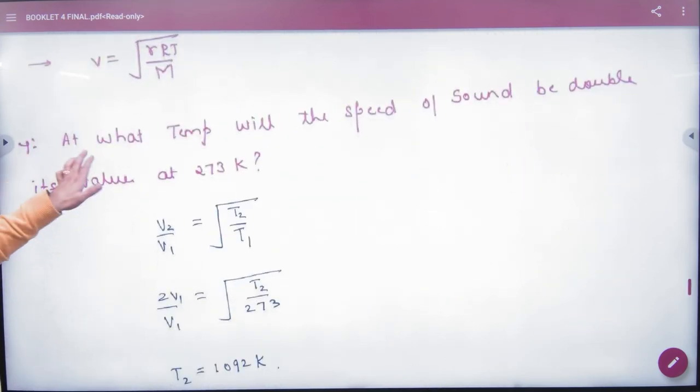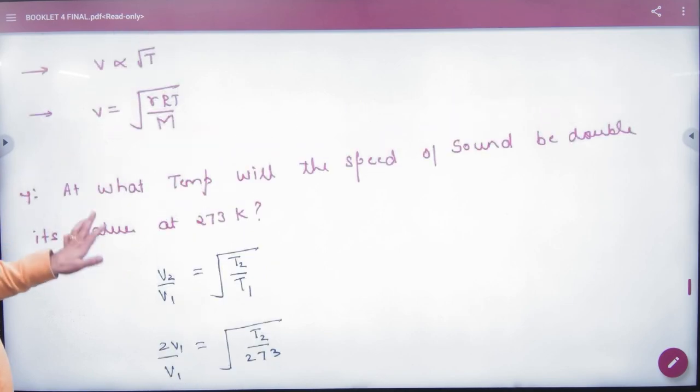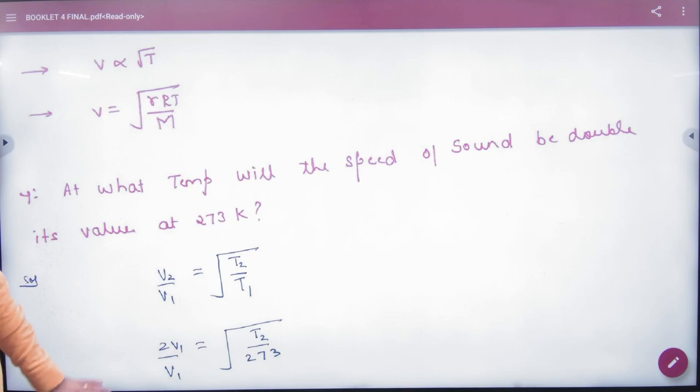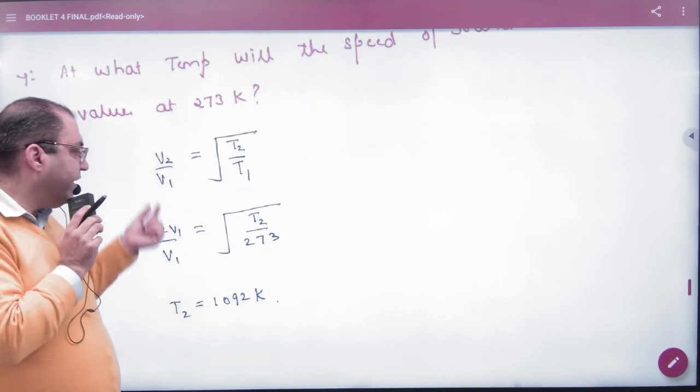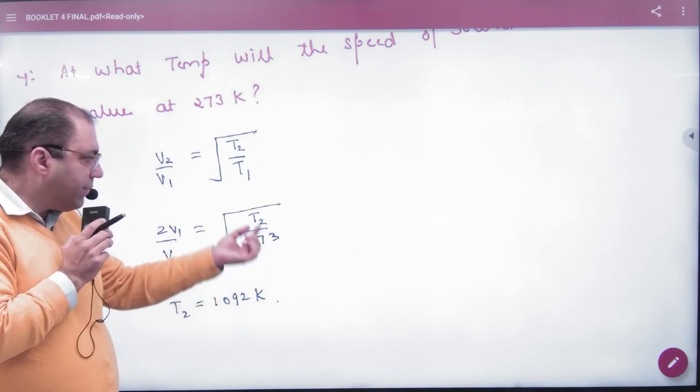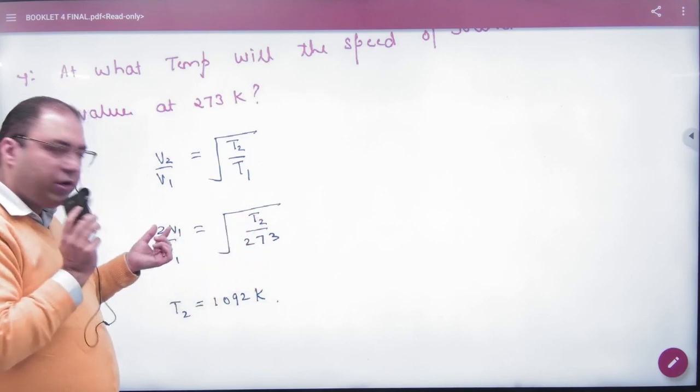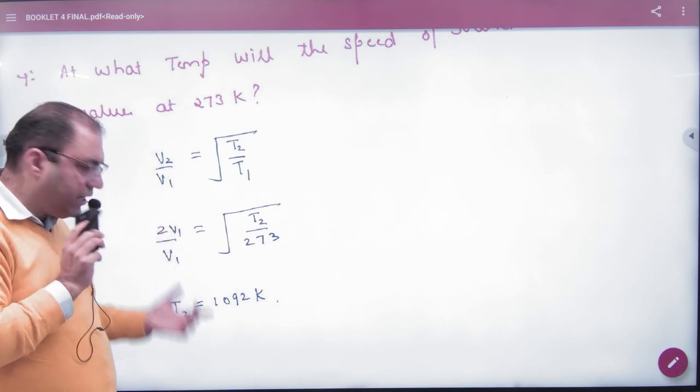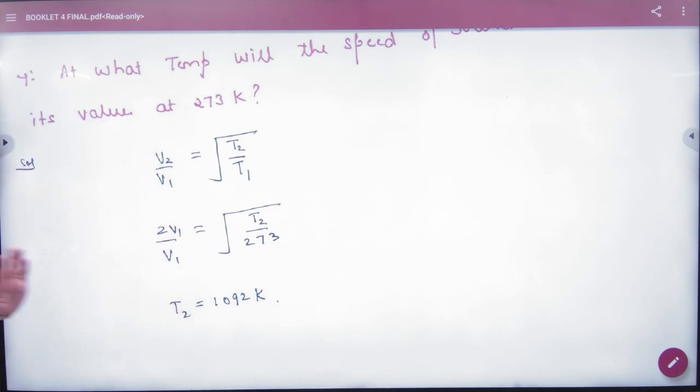Jaise: at what temperature, temperature temperature nikalna hai, will speed of sound be double the value at 273. Speed jo hai woh directly proportional to under root of temperature hai. So T2 by T1 equals V2 by V1. Temperature pehle kitna hai: 273. Naya temperature nikalna hai jab speed kya ho jayegi sound ki pehle se double. So V1 se V1 cancel, T nikalna hai, answer. Seedha question hai.